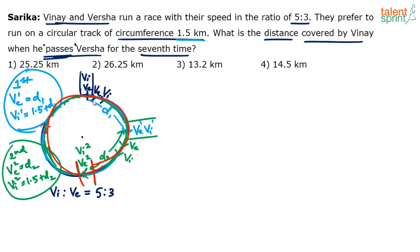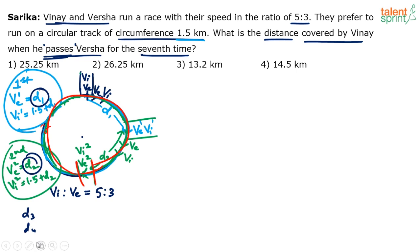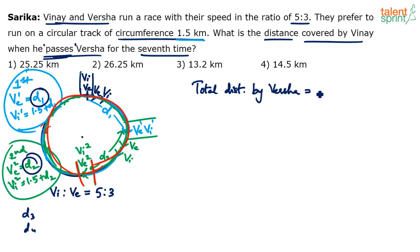In the total seven crossings where Vinay passes Varsha, what is the total distance covered by Varsha? It's d1 + d2 + d3 + d4 ... up to d7. Let's call the total distance covered by Varsha = D. This is where the actual solution starts.